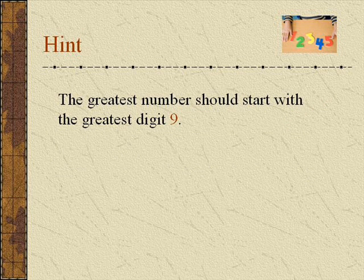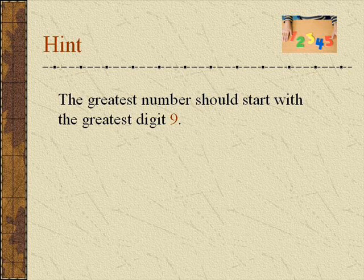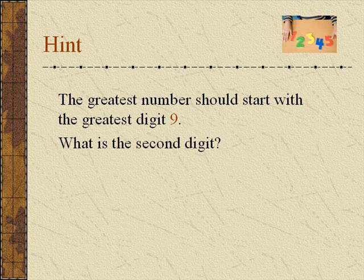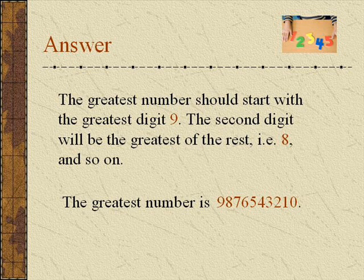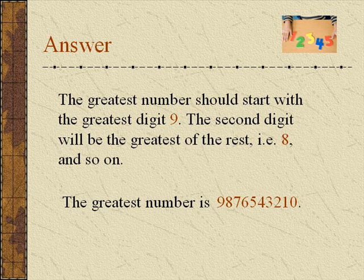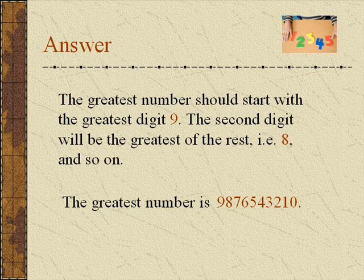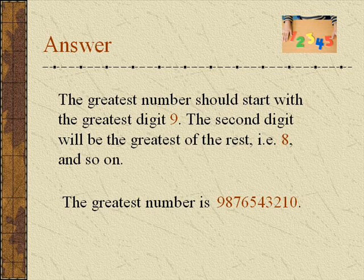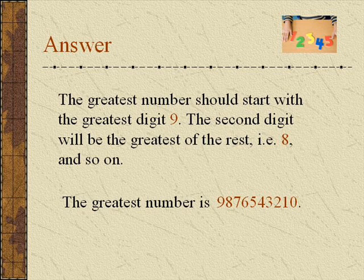The greatest number should start with the greatest digit, 9. What should the second digit be? The second digit will be the greatest of the rest, i.e., 8, and so on. The greatest number is 9,876,543,210. Now try to say it yourself.